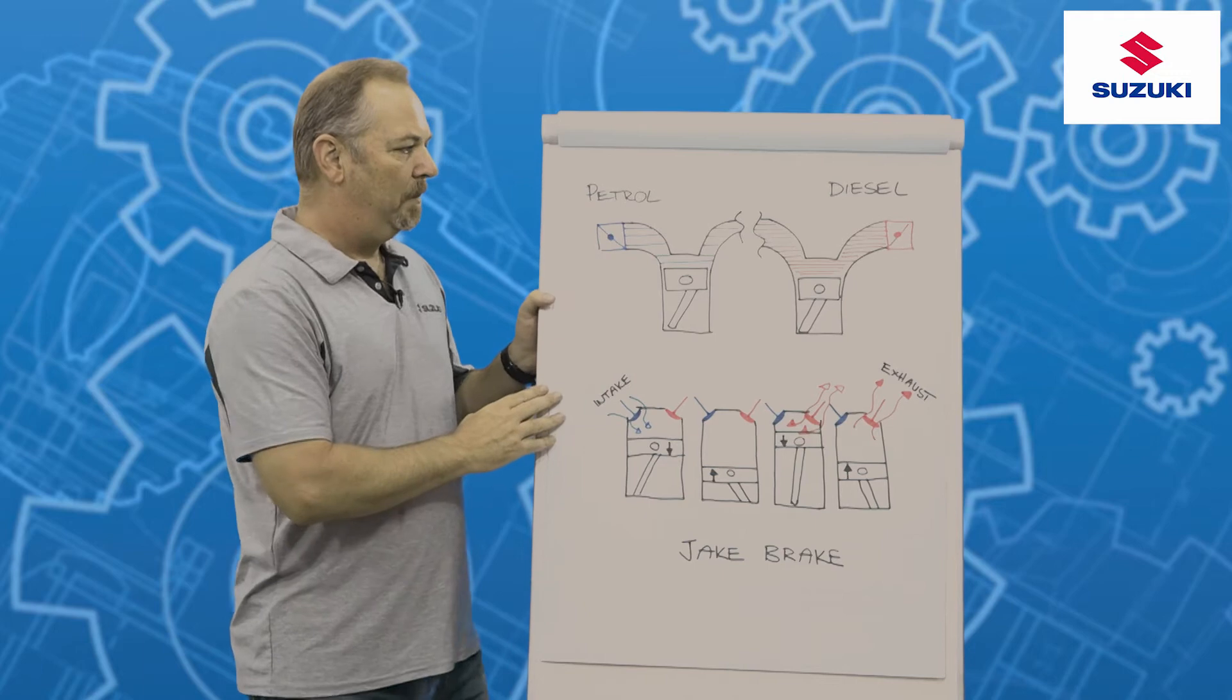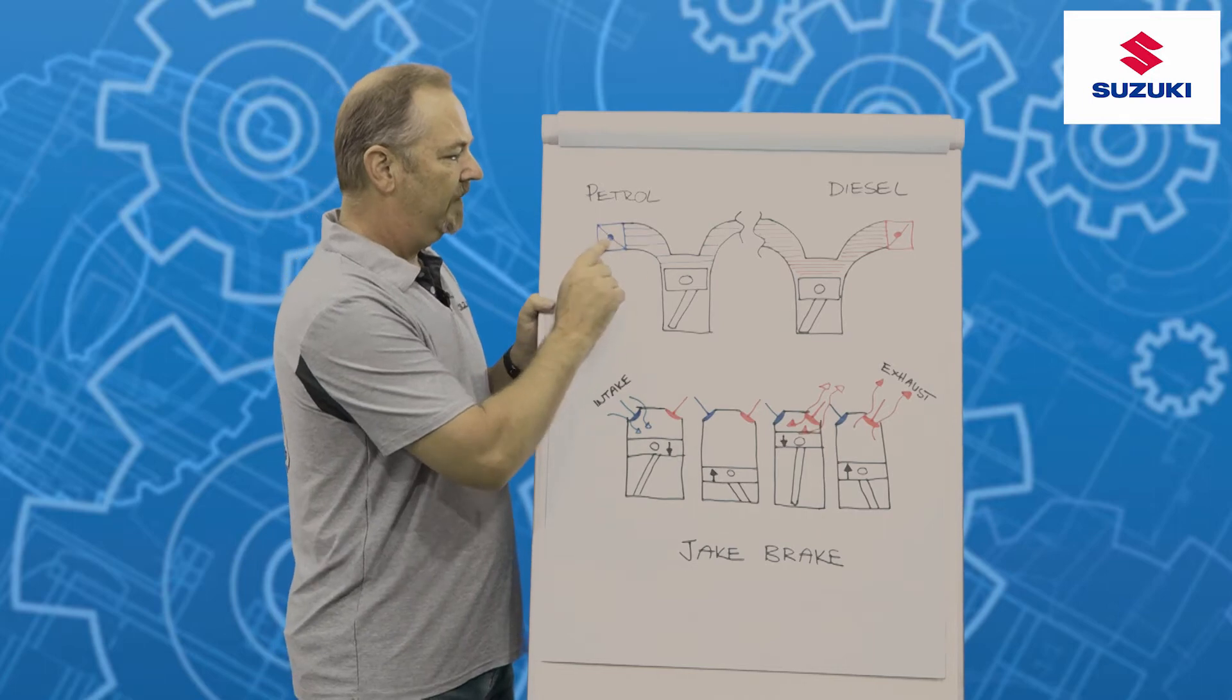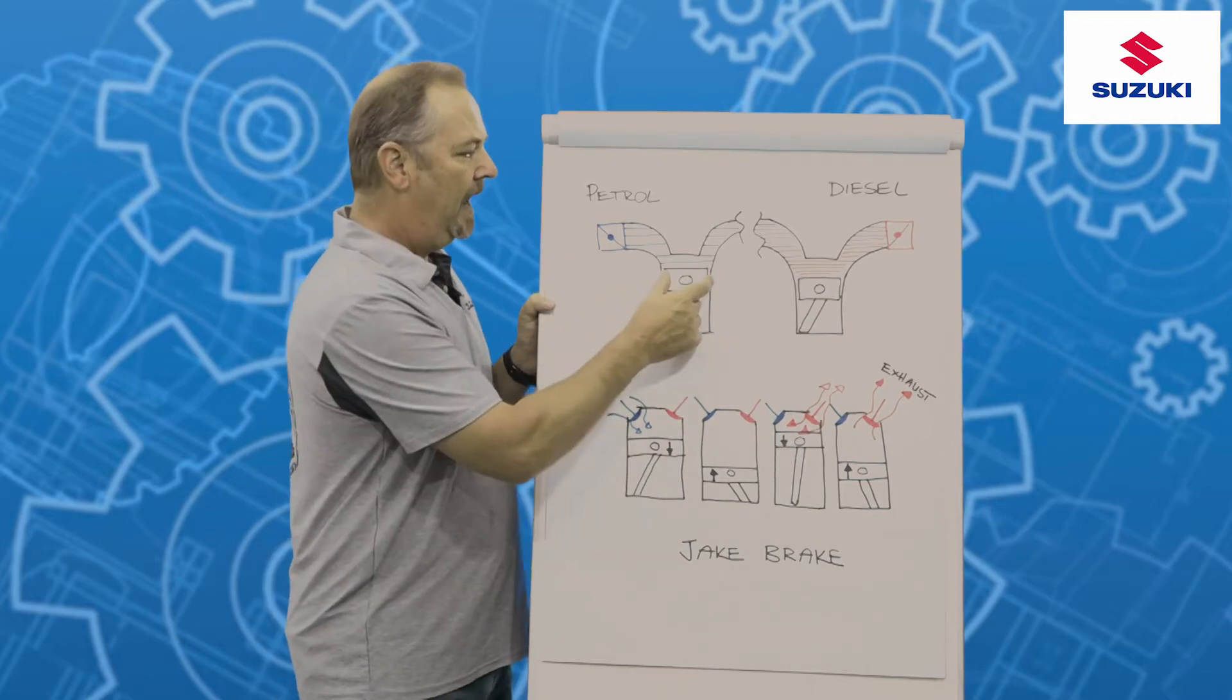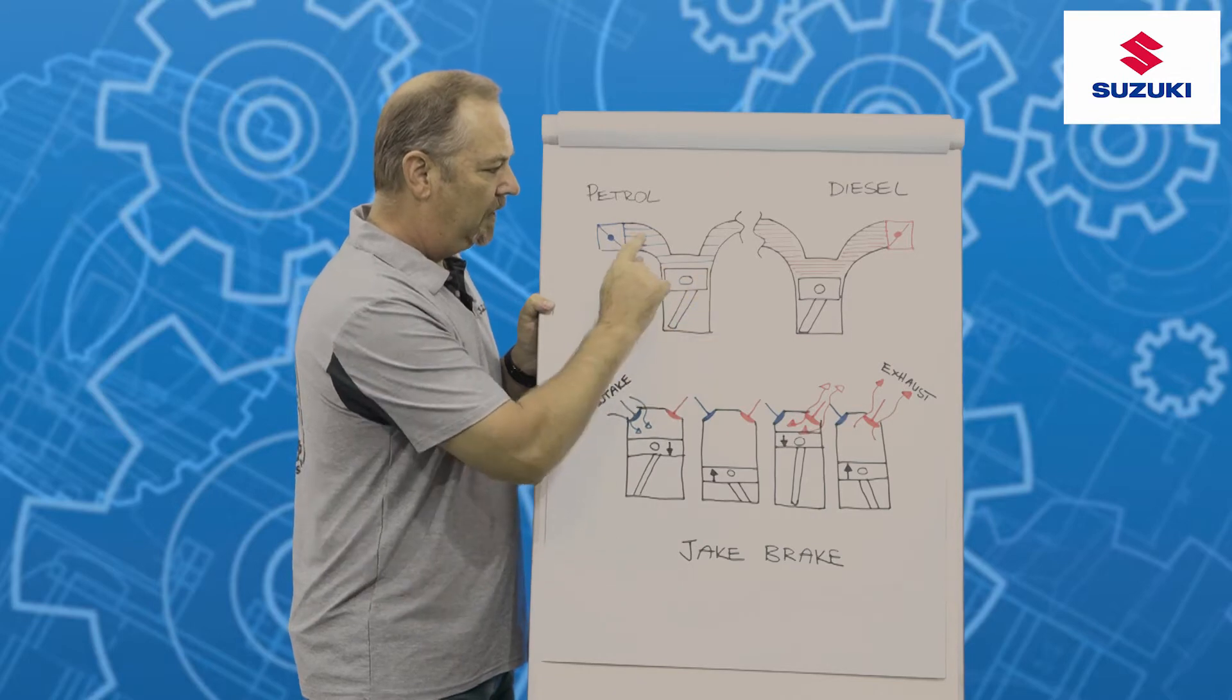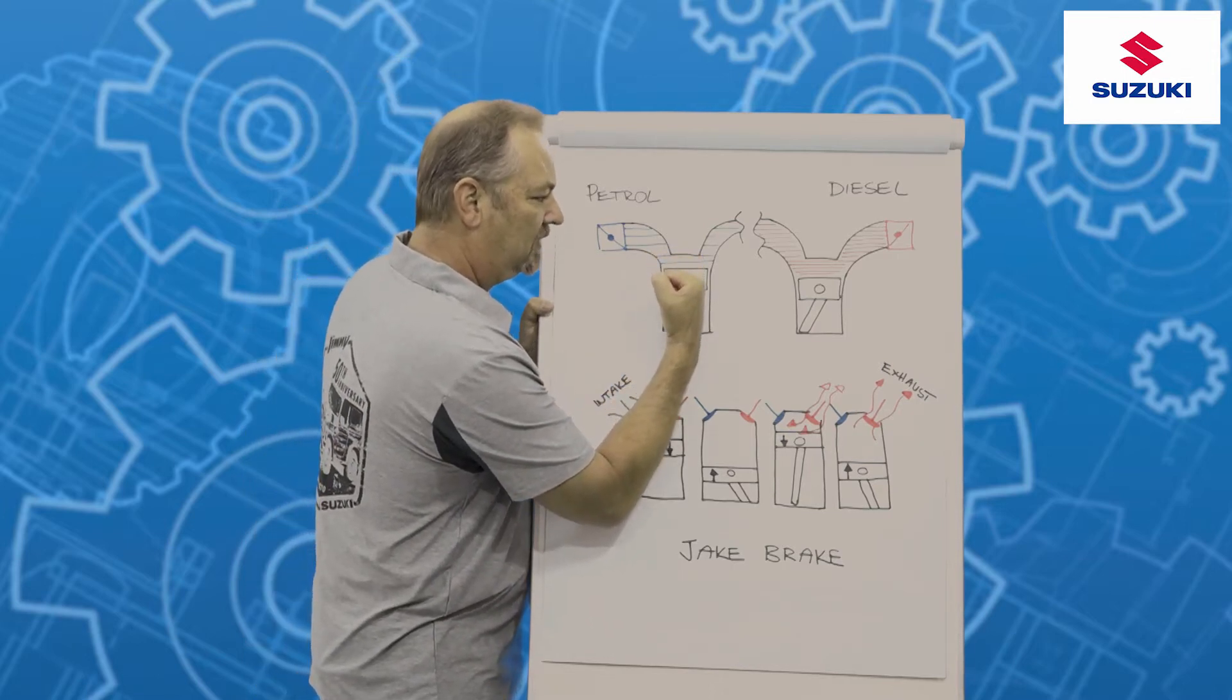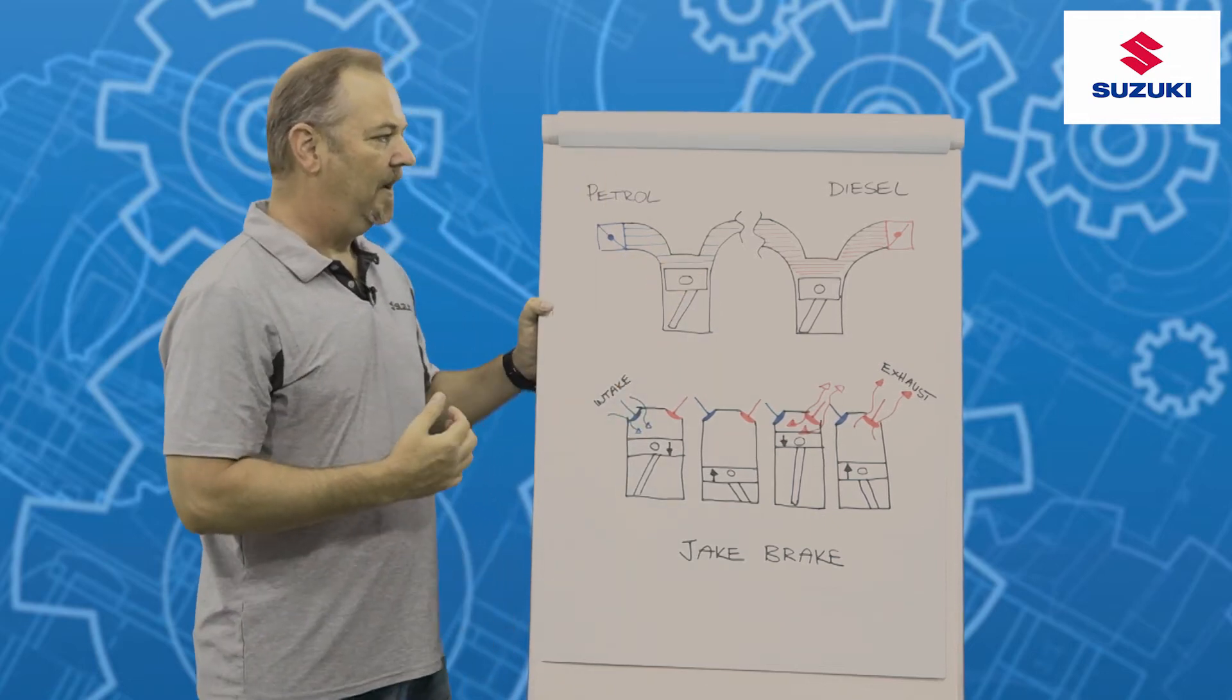So let's start off with a petrol engine and how we achieve engine braking. Now on the intake side we have a butterfly valve, and what we want to do is close the butterfly valve when we take our foot off the accelerator. When the piston moves down, it creates a vacuum inside the cylinder. And that vacuum actually restricts the motion of the piston, and that's how we slow down the movement of the piston and create the engine braking effect.